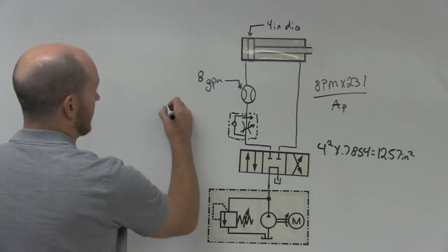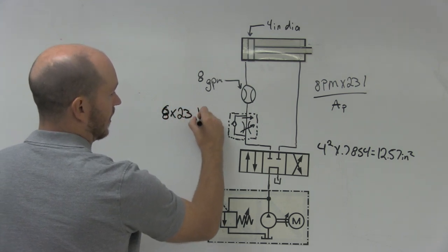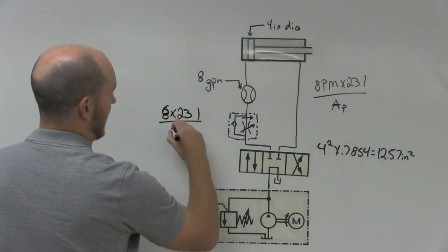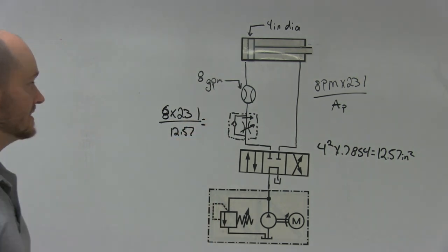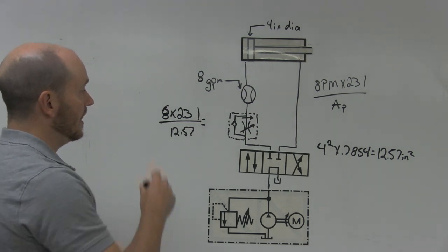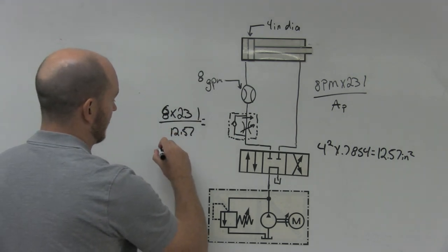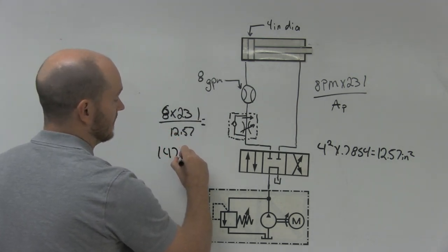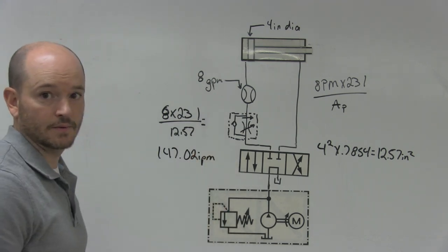So we have 8 gallons times 231 divided by 12.57, and this would give us the answer in inches per minute. So type this into your calculator, and you should come up with 147.02 inches per minute.